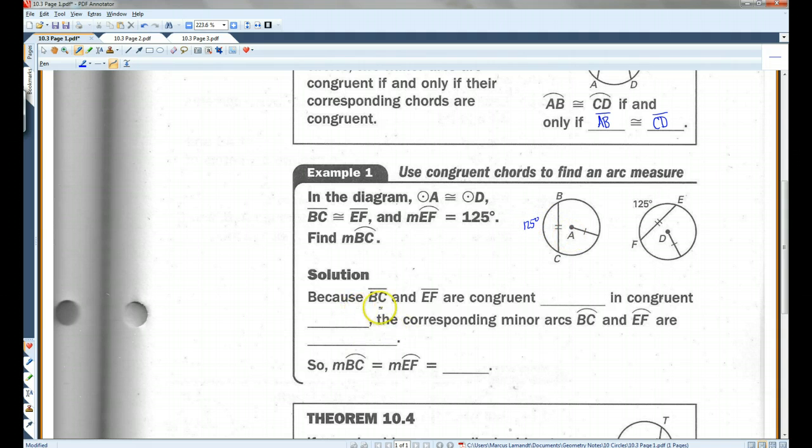Because BC and EF are congruent chords in congruent circles, the corresponding minor arcs BC and EF are congruent. So, the measure of arc BC equals the measure of arc EF, which equals 125 degrees.